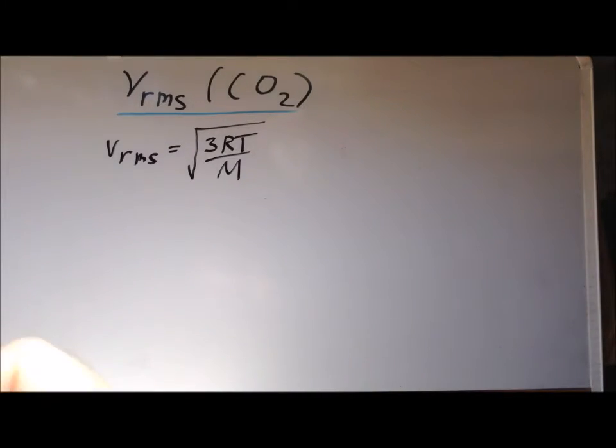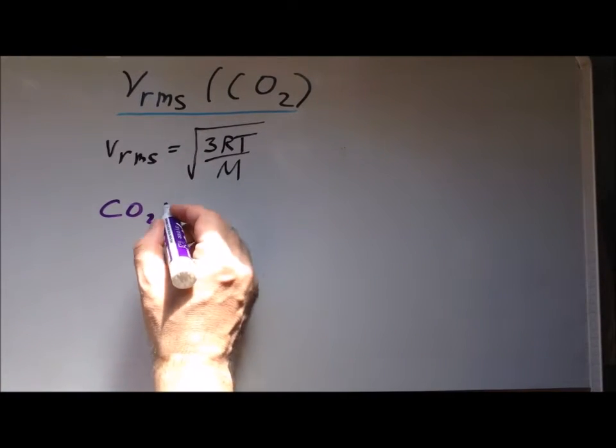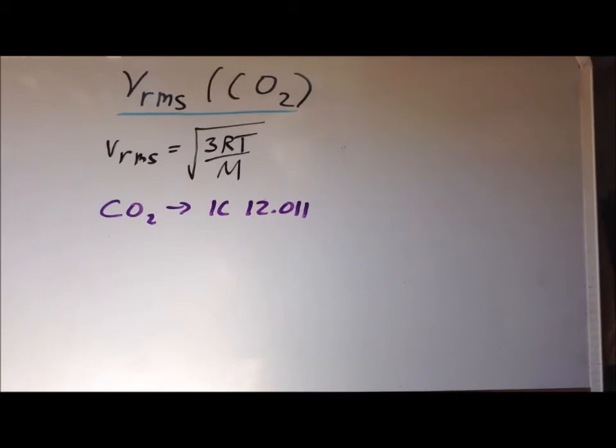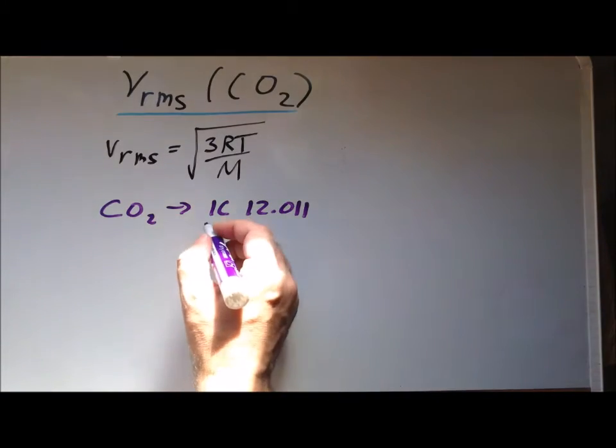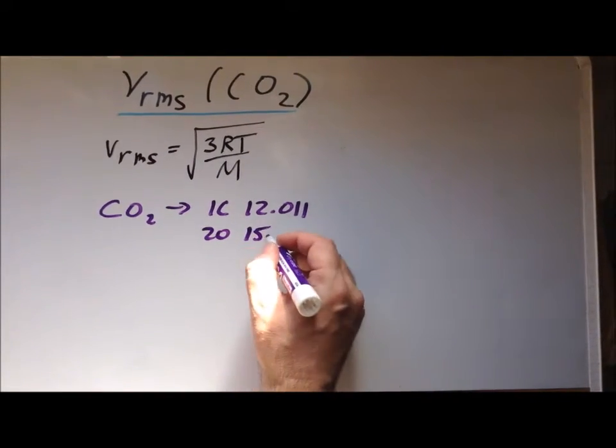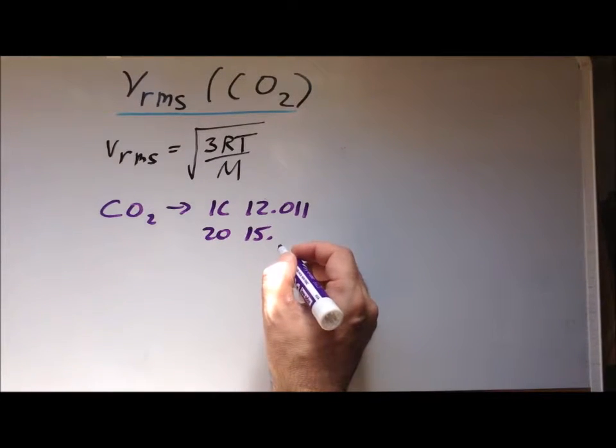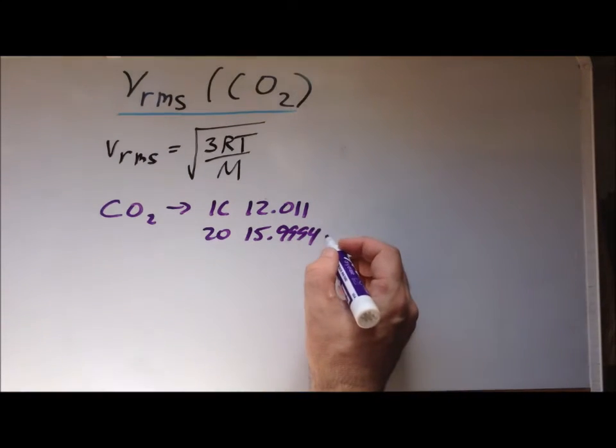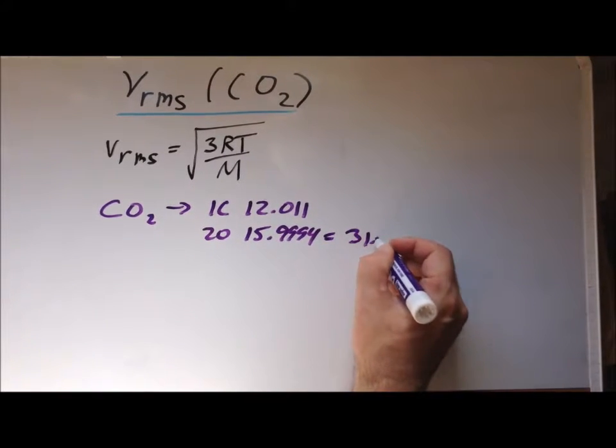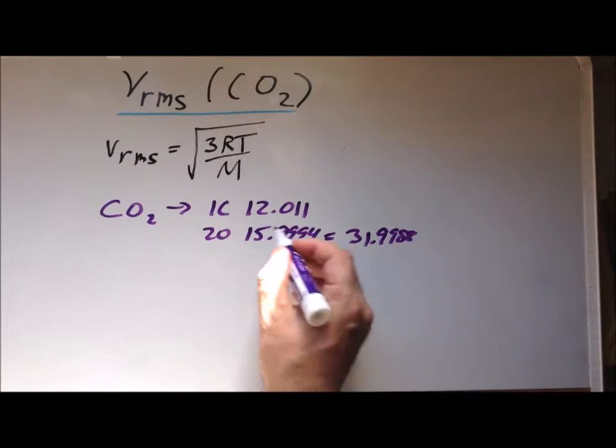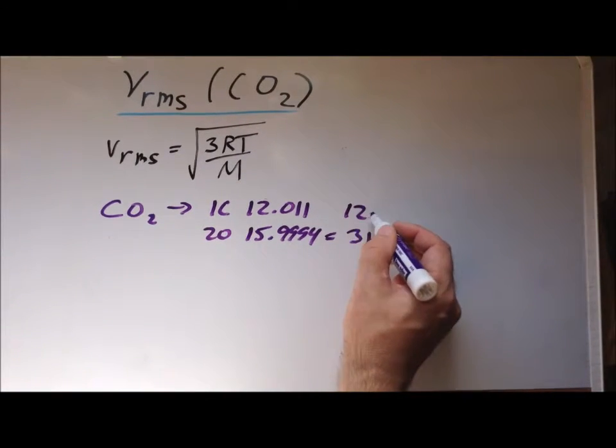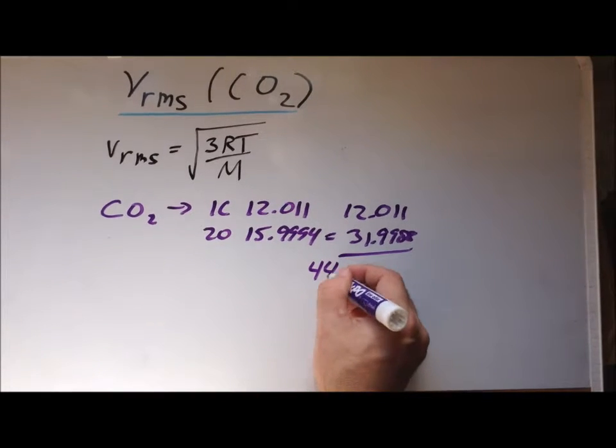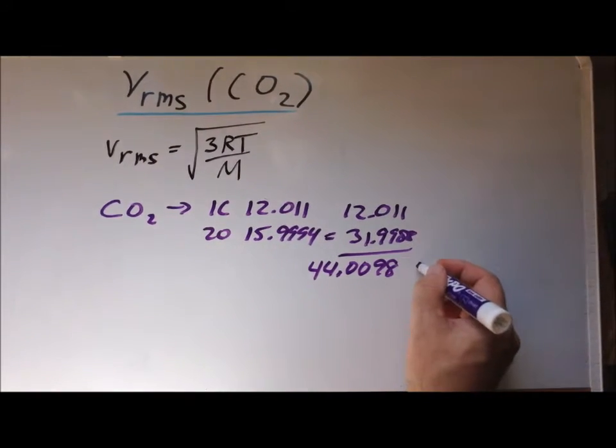For carbon dioxide, which has the formula CO2, we know that it has one carbon atom, which has a mass of 12.01 atomic mass units. It also has two oxygen atoms, each one of which has a mass of 15.9994 atomic mass units. So we multiply that by 2, 31.9988. We have one carbon atom with a mass of 12.011. And if we add those together, we get a molar mass of 44.0098, and that's grams per mole.